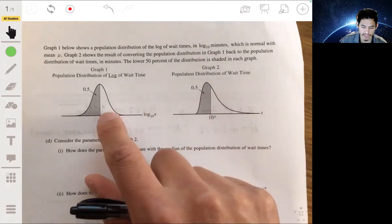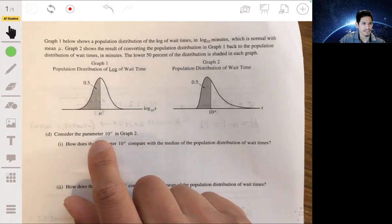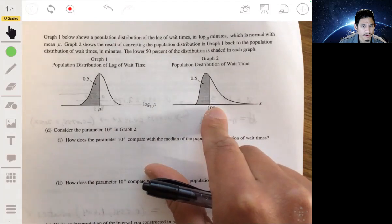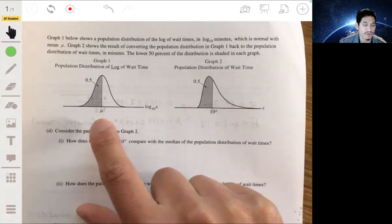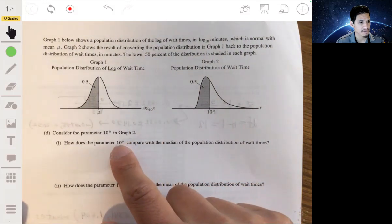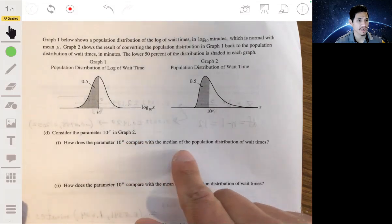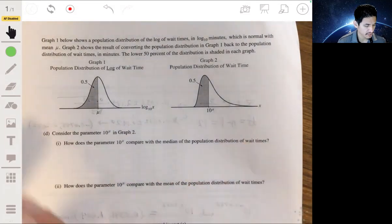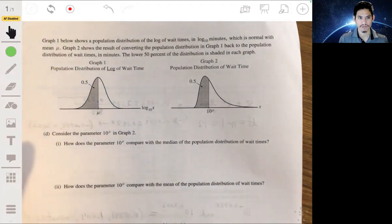Part D: Graph one shows the population distribution of log wait times in log base 10 minutes, and it's normal with mean mu. Graph two shows the result of converting the population distribution back to the population distribution of wait times in minutes. They shade the lower 50% in each graph. Question D is dealing with the parameter 10 to the mu, so 10 to the mean or the true population mean. It's asking how does the parameter 10 to the mu compare with the median of the population distribution of wait times?